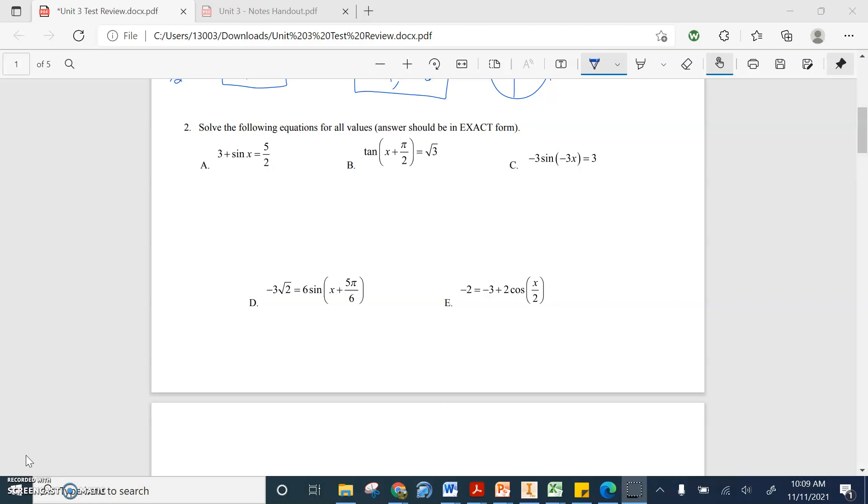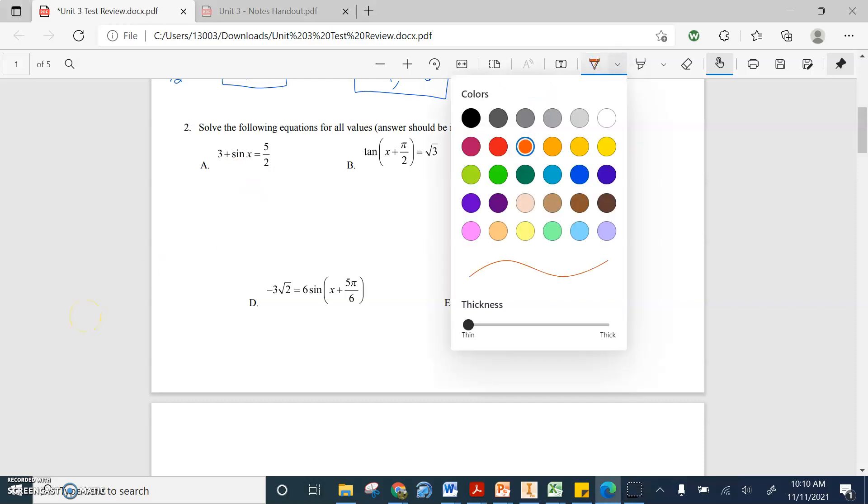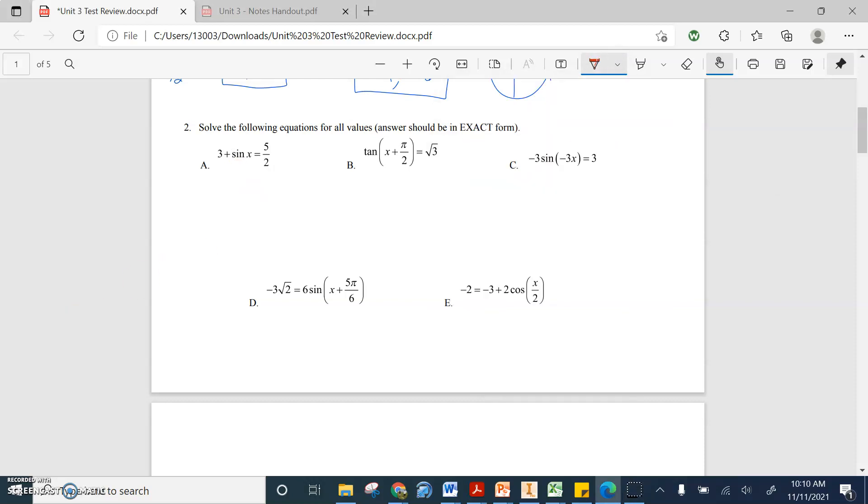In class we talk about there's kind of two or three steps we always follow. And the first step is going to be just getting the sine value on one side of the equation by itself. And right now we have it being added three to it. So what we need to do is undo that. So we're going to subtract three from both sides.